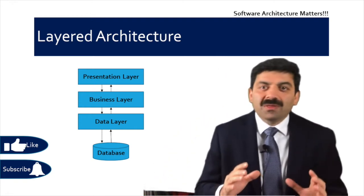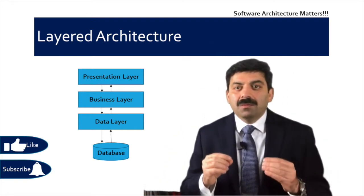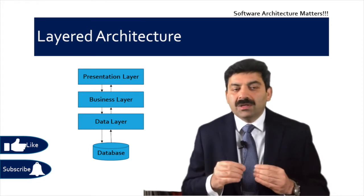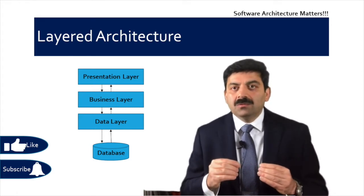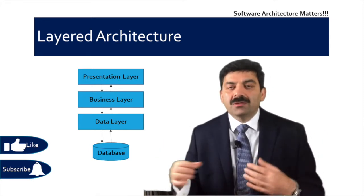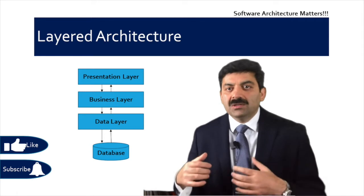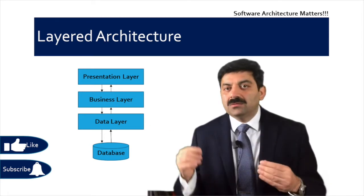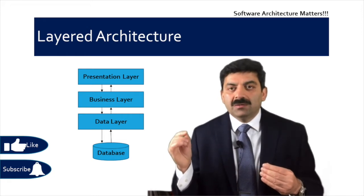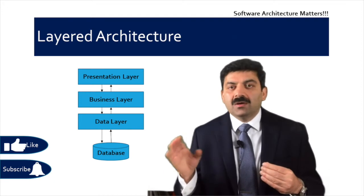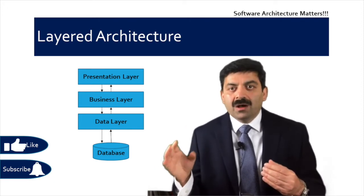Then we have a business layer. In the business layer, we have some business-related, domain-related logic — for example, to place an order, you need to have an item in the inventory. That kind of validation goes inside the business layer. It is a good practice to double-check your validation code in the business layer, because somebody can compromise the presentation layer validation by disabling JavaScript on the browser.